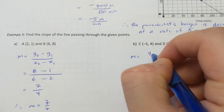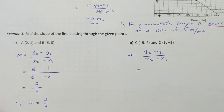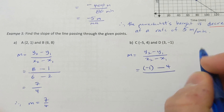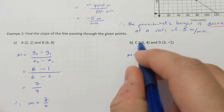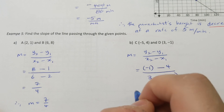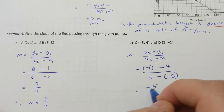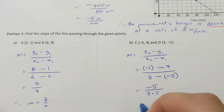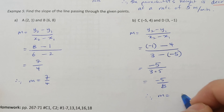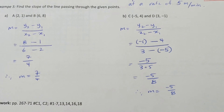This next pair of points has some negative numbers. Y2 is negative 1 minus y1, which is 4, giving negative 1 minus 4 equals negative 5. The denominator becomes 3 plus 5 equals 8. Therefore, the slope equals negative 5 over 8. Again, no units because there is no context to this question.